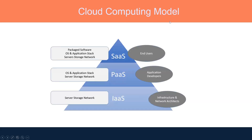The cloud computing model has three types. First is Infrastructure as a Service (IaaS), where we ask the cloud provider to provision the infrastructure for us, and there we can install our application and operating system. For example, if we require a computer with two core processor and four or eight GB of RAM, we can go to the cloud provider portal, select our infrastructure, make it up, and deploy our operating system and application on top of it.